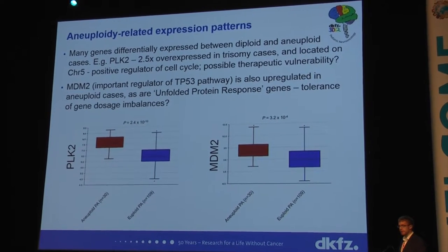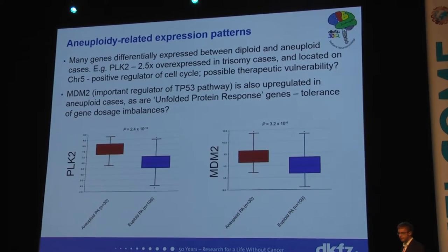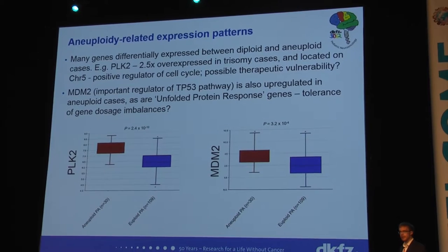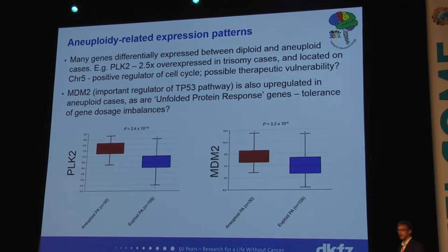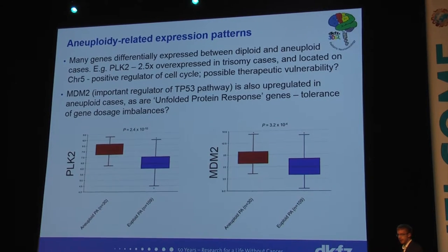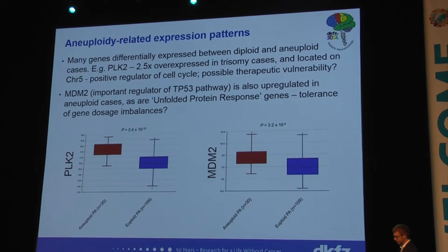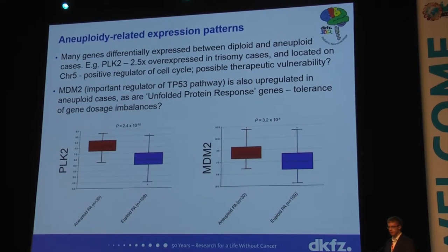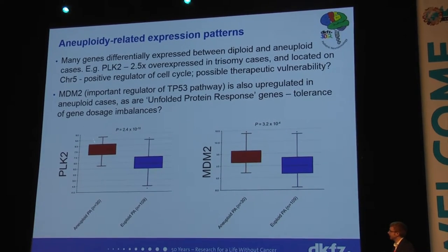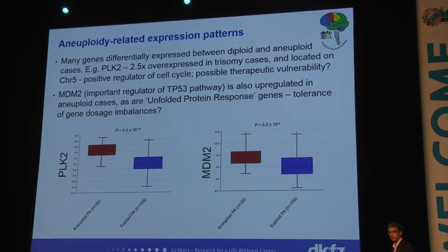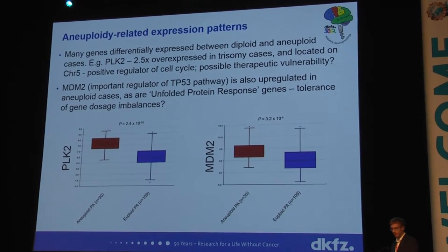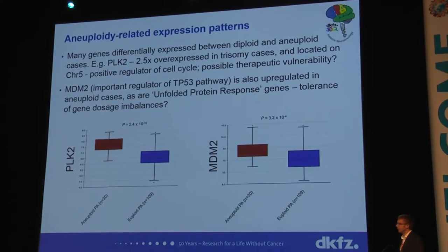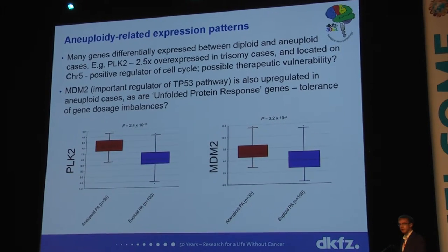When we looked at whether this phenotype correlates with other factors, the difference in expression between aneuploid and diploid cases is quite marked — far more strikingly than differences in age or location. Just pointing out two genes here: PLK2 and NTN2, where you see a very clear difference in expression. Interestingly, PLK2 is on chromosome 5, which is one of the chromosomes most frequently affected by trisomy. But it's certainly more than just a simple dosage effect, and it might be one of the reasons driving this enrichment for gain of chromosome 5.